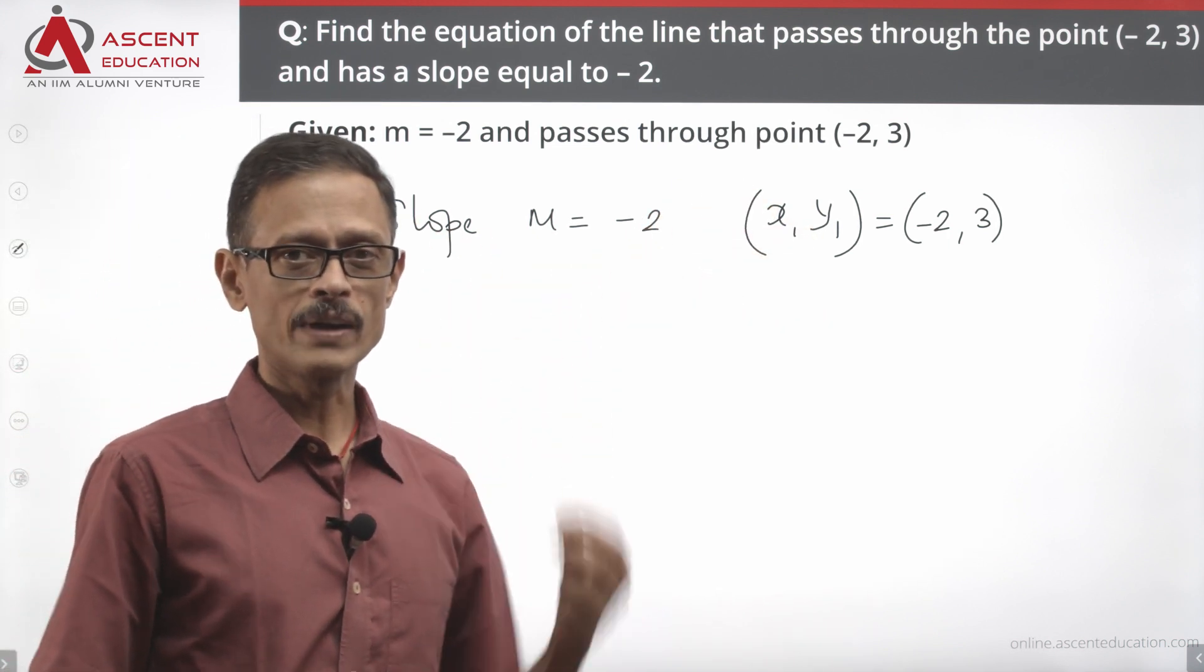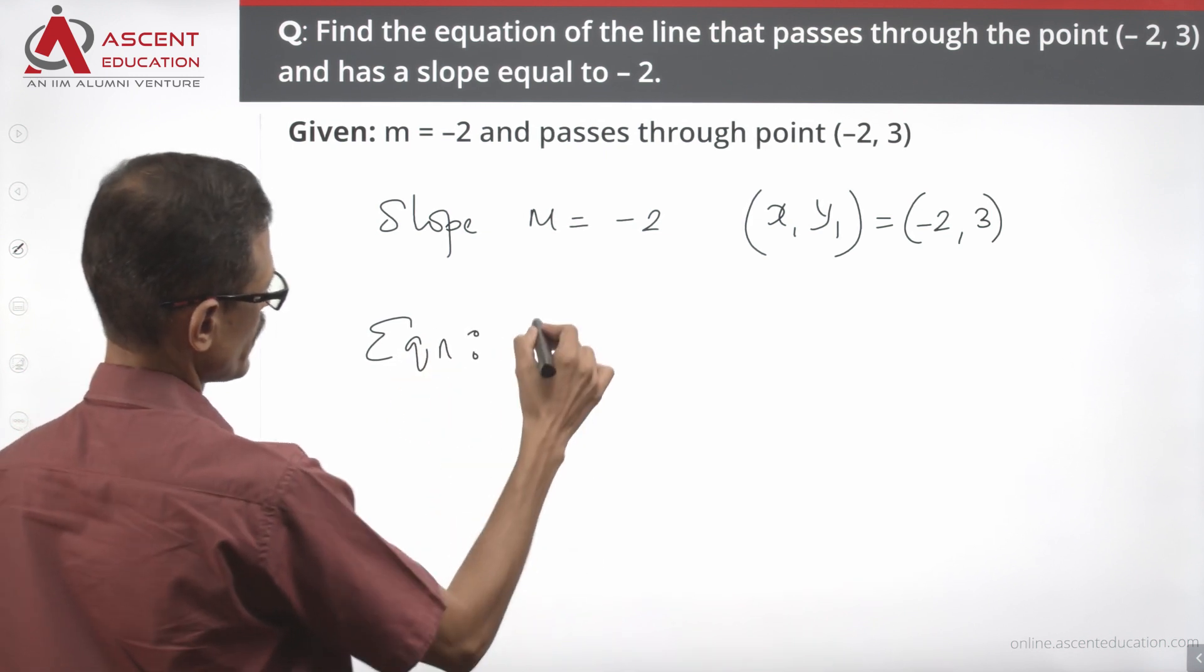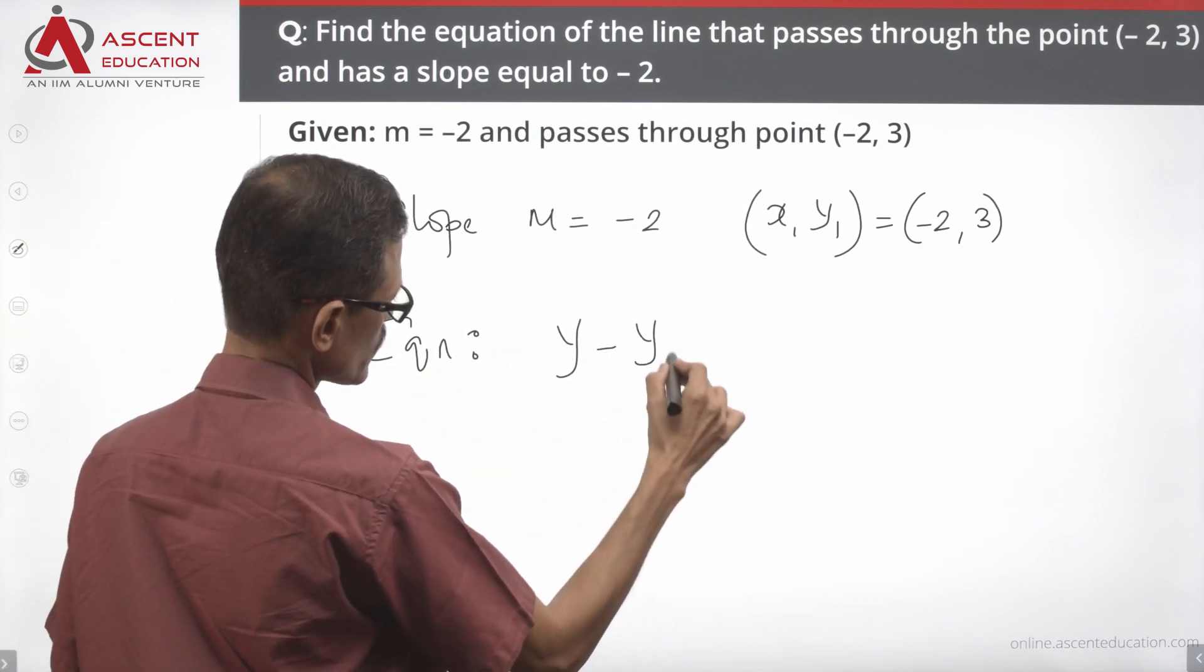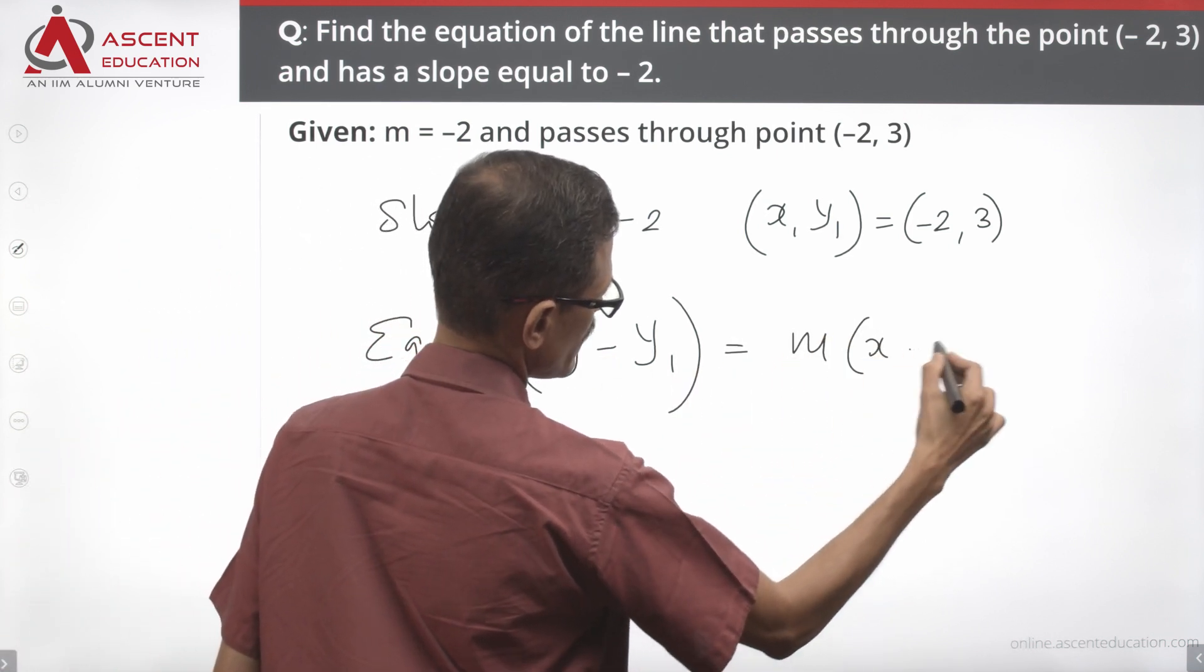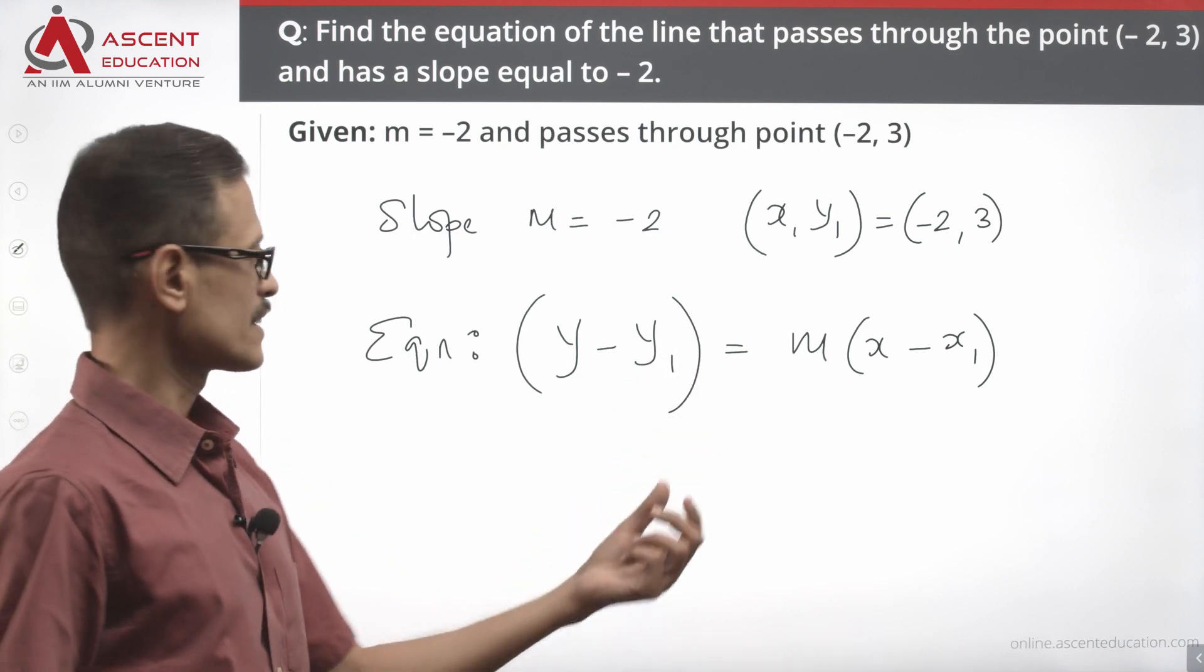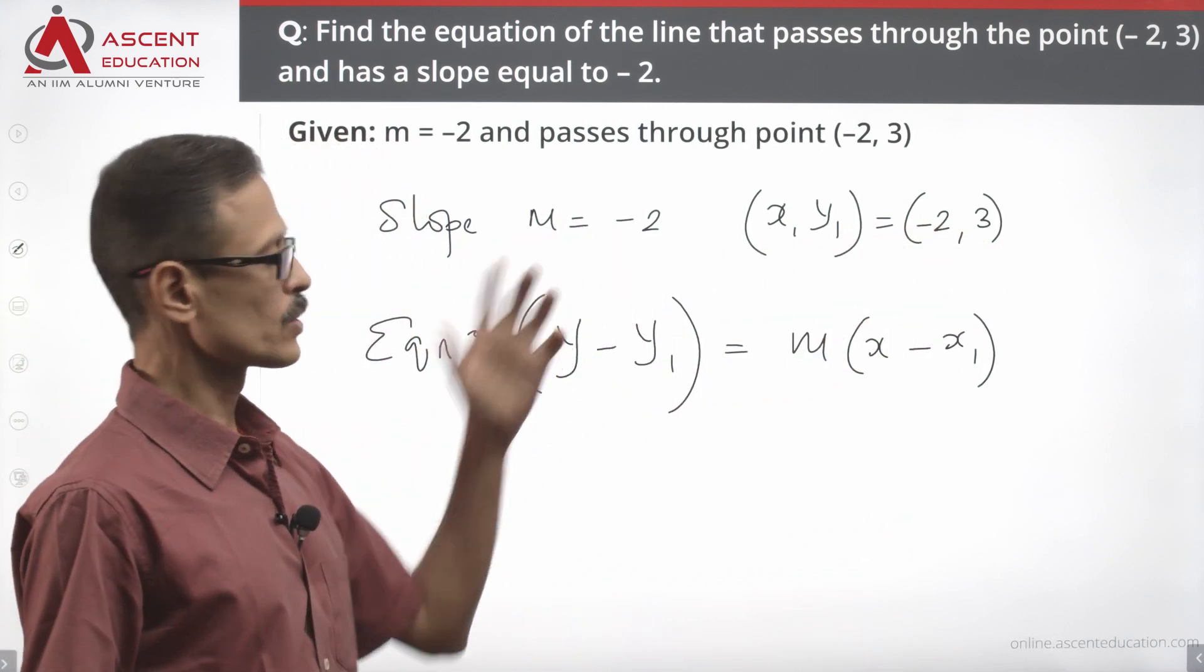When the line passes through a point, the equation of the line can be found using this expression: y minus y₁ equals M into x minus x₁. We have all the details: x₁ is minus 2, y₁ is plus 3, and M equals minus 2.